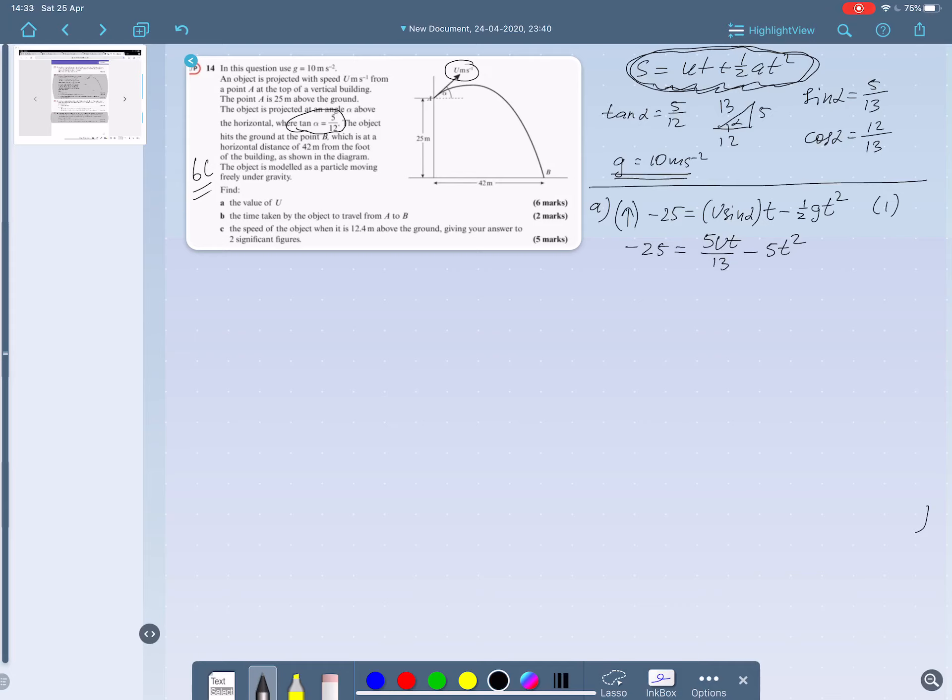Two unknowns, u and t, where t is the moment of time when the particle hits this point. What else do we know? The horizontal displacement of the particle at this moment of time will be 42 meters. So we can write down another equation: 42 equals u cos alpha t. If we substitute cos alpha, we have 42 equals 12ut over 13. So another equation, number 2, which has two unknowns, u and t. The next task is to combine these two equations together in such a way that we can eliminate t and get the equation just in terms of u.